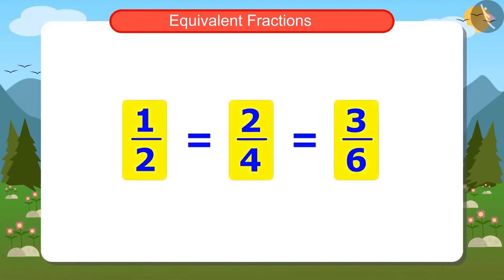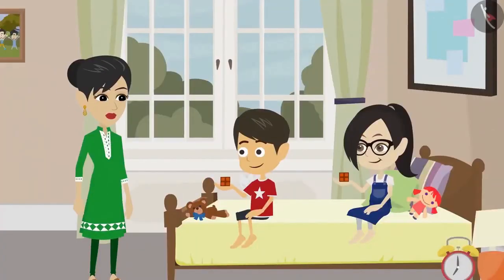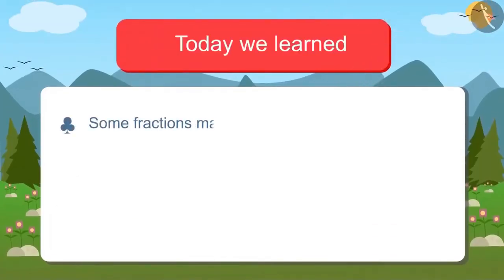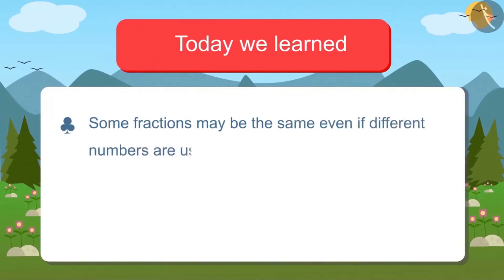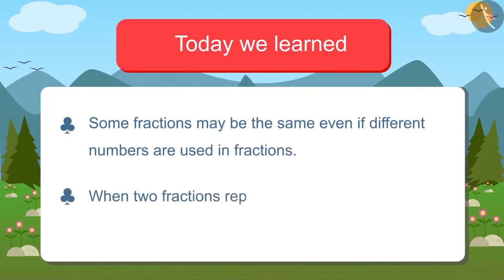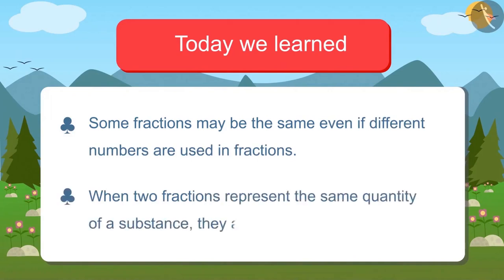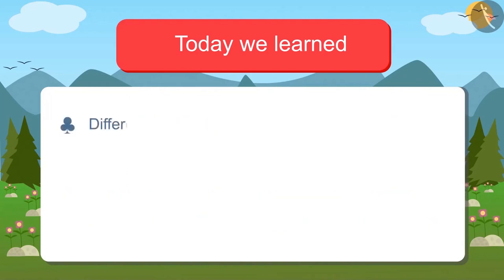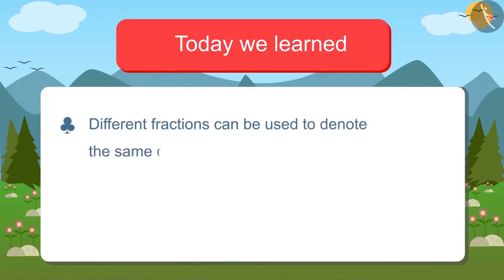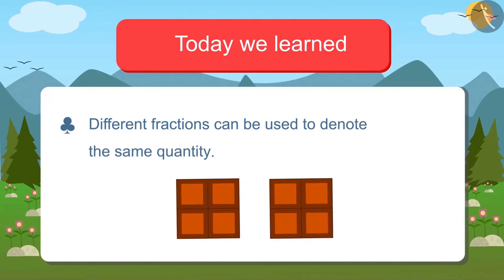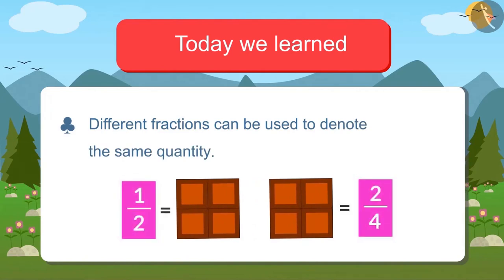Vandana notices that the numbers written are different in these fractions, yet these fractions are showing the same quantity of chocolate, and asks what such fractions are called. Mummy explains: when different fractions show the same quantity of a substance, they are called equivalent fractions. You will learn them in detail in further classes. Today we learned that some fractions may be the same even if different numbers are used. Different fractions can be used to denote the same quantity — for example, to represent half of a chocolate, one can write one half and also two fourths.